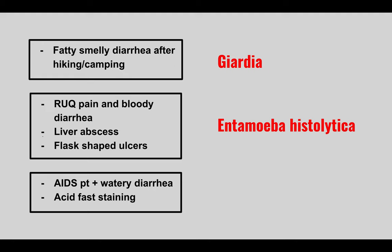This is Entamoeba histolytica. They can show you an image of pathogens that engulf red blood cells, and the cyst can have multiple nuclei. The next patient is going to be an AIDS patient that gets watery diarrhea and the pathogen is acid-fast staining.